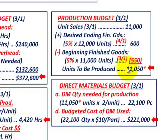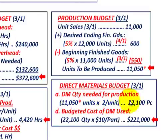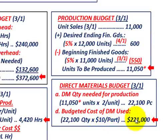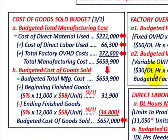Going back to our direct materials budget, we use 11,050 units times two parts per unit for 22,100 pieces. The budgeted cost of direct material is 22,100 pieces times $10 per part, which equals $221,000. So our cost of direct materials used is $221,000.